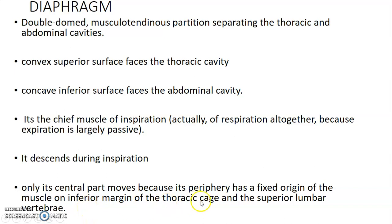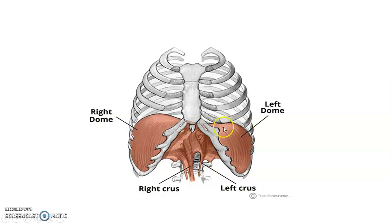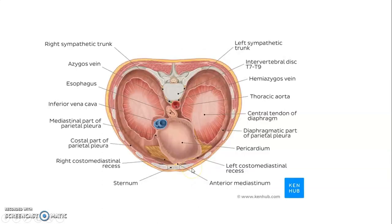The periphery is fixed onto the thoracic cage and superior lumbar vertebrae. The thoracic diaphragm has convexity on the thoracic cavity side and concavity in the abdomen, and you can appreciate the domes and the attachment onto the vertebra.